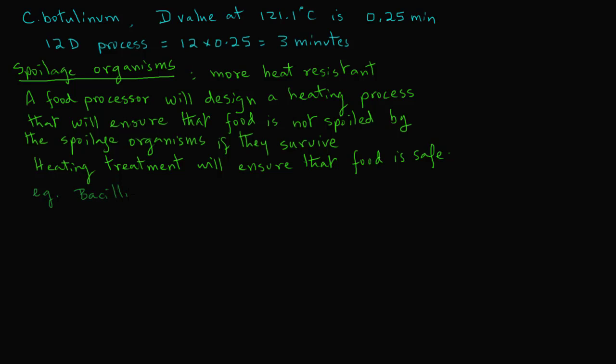For example, one of the spoilage organisms is Bacillus stereothermophilus, and in spinach it has a D value of 4.94 minutes at 121.1 degrees C. We compare this value, 4.94 minutes, with Clostridium botulinum, which has a D value of 0.25 minutes.